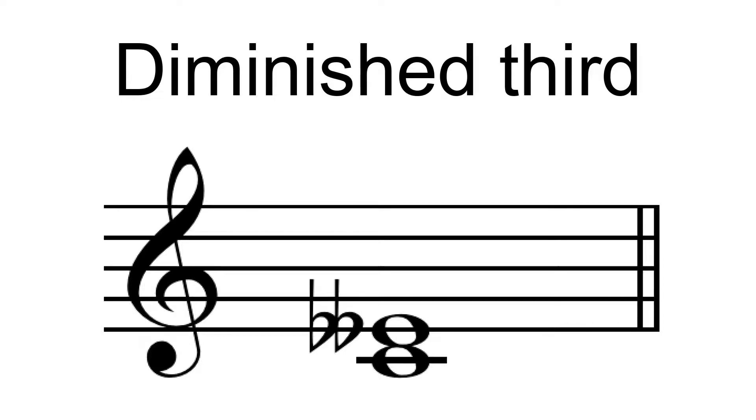In classical music from Western culture, a diminished third is the musical interval produced by narrowing a minor third by a chromatic semitone.